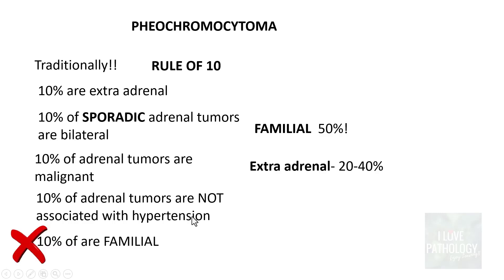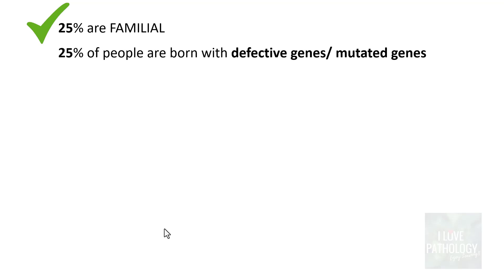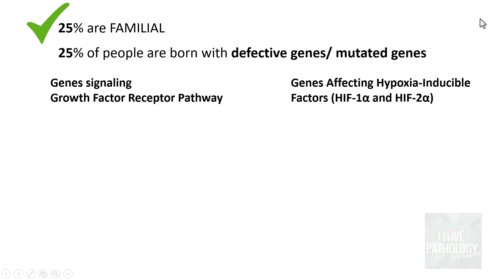10% of tumours are familial by earlier observation, but now it is said that around 25% of pheochromocytomas are familial — meaning 25% of people are born with mutated genes. These defective genes fall into two categories: one affecting the growth factor receptor pathway, and two affecting hypoxia-inducible factors HIF1α and HIF2α.